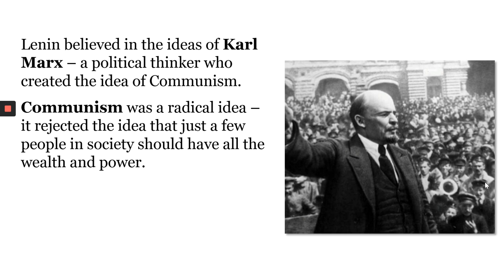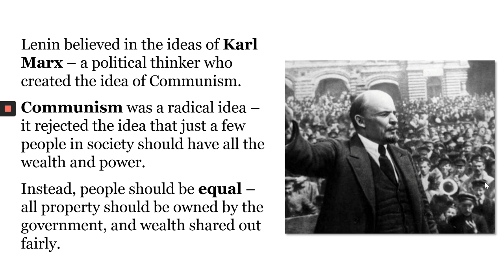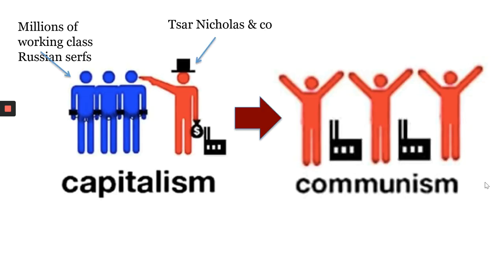Communism was a radical idea then and now. It rejected the idea that just a few people in society should have all the wealth and power. Instead, under communism, all people would be equal. All property would be owned by the government and therefore by the public, and wealth would be shared out fairly. So, what we had before 1917 was a capitalist system in Russia. As you can see from the icon on the left, the man in the top hat is effectively Tsar Nicholas and the ruling classes. He has all of the money and all of the means of production — the factories, the resources and the land — and he has all the power over the working class serfs on the left, who effectively have no rights at all.